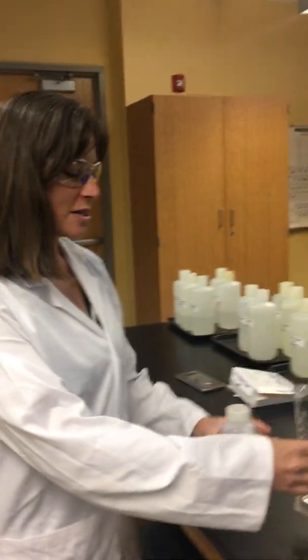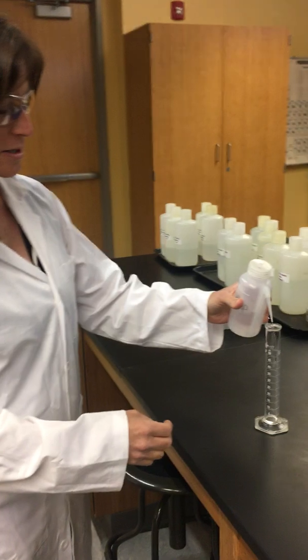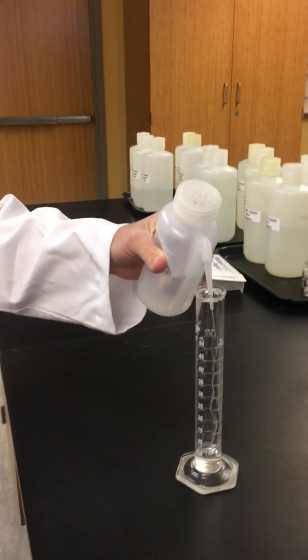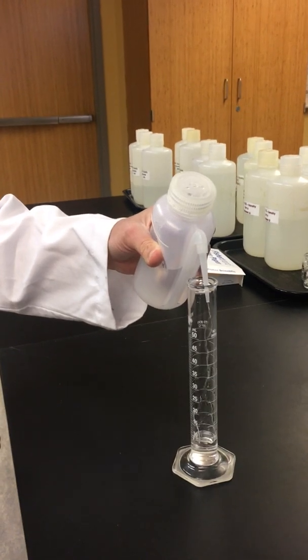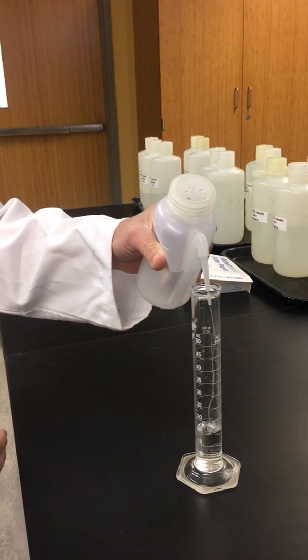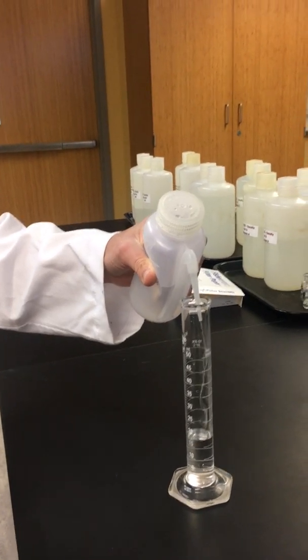So in the procedure it tells you to pour in approximately 20 milliliters of water. The volume is not appropriate. What we're doing is we're learning how to properly measure the volume from a graduated cylinder. So we'll just put in some water.